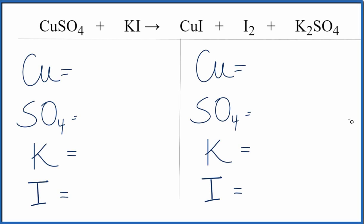This is another challenging equation. We have copper 2 sulfate plus potassium iodide, and then we have these three different products. So let's count the atoms up and see what we can do.